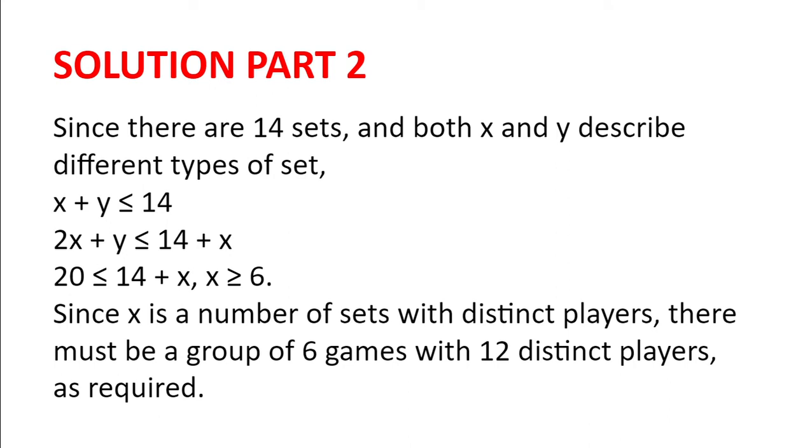Now since there are 14 sets and both x and y describe different types of set, one which is when both boxes of the set are filled and the other when exactly one box of the set is filled, we know that x plus y is 14 or less than 14. It physically cannot be greater than 14 because we would get a contradiction. Now we can add x to both sides of the inequality to get 2x plus y is less than or equal to 14 plus x.